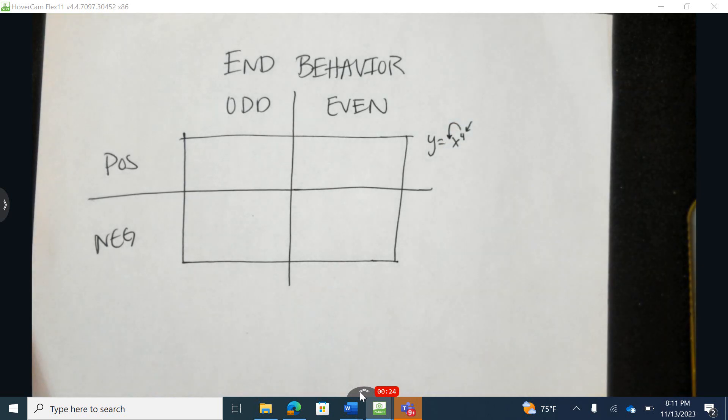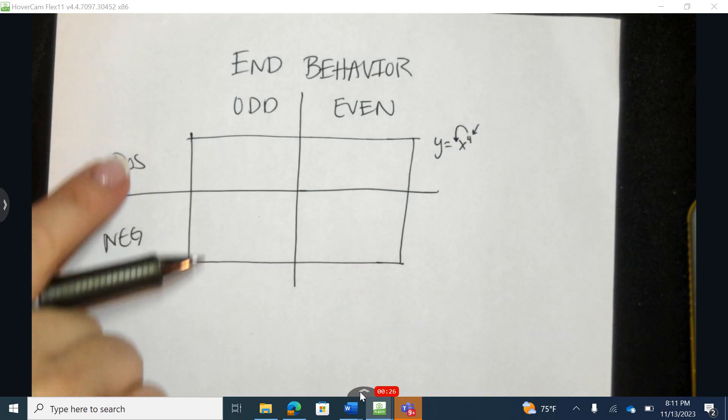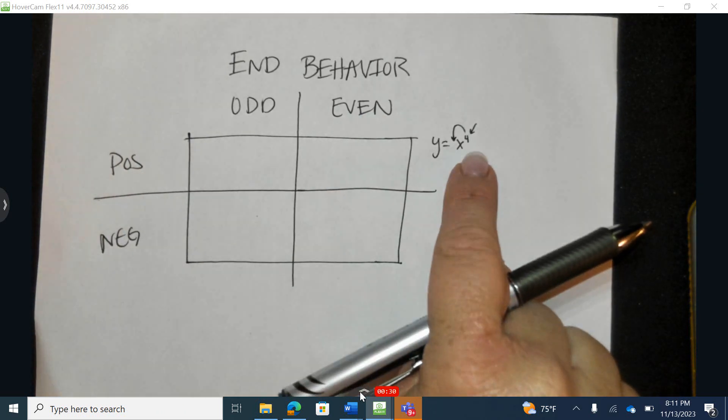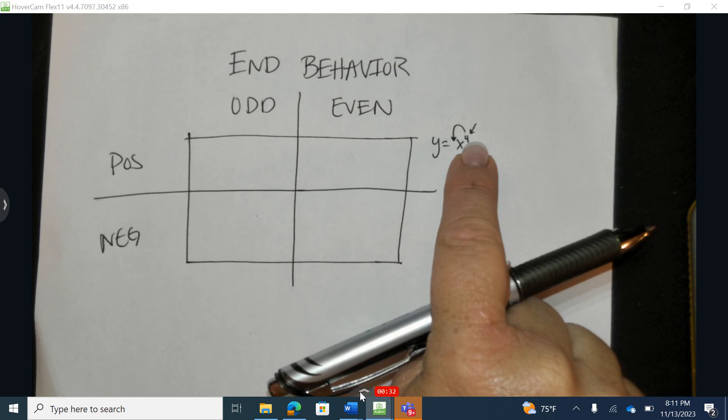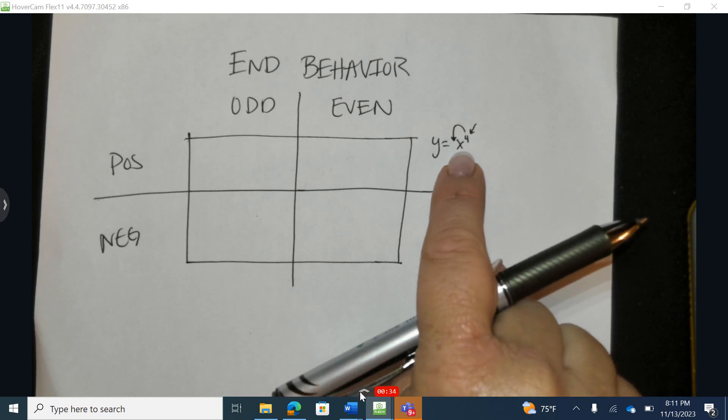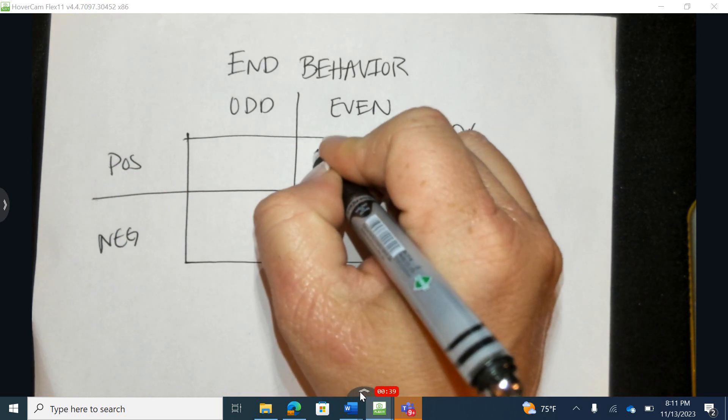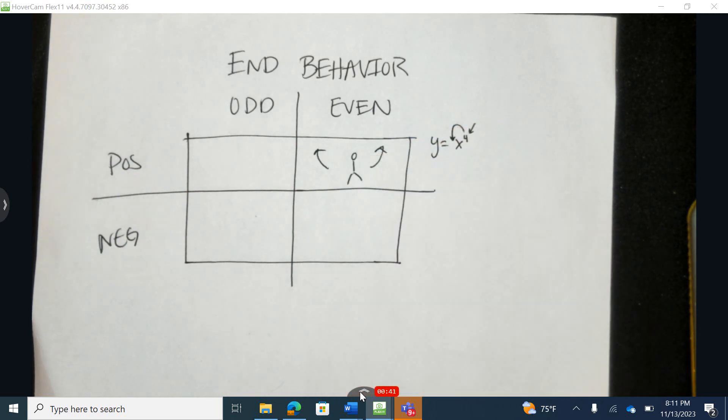The number directly in front will determine if it's positive or negative. So even positive means the highest value on a variable is an even number, and when the number in front of that variable is positive, we say that both on the left and on the right, it goes up.